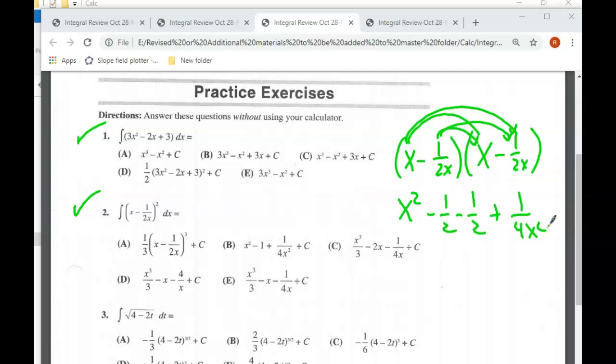And so what I would do is I would start by rewriting this as x squared minus 1, that's what you would get if you combine those two halves together, plus 1/4 x squared. And then from there, I would go ahead and do the integration just piece by piece. Let's see how that turns out for you.